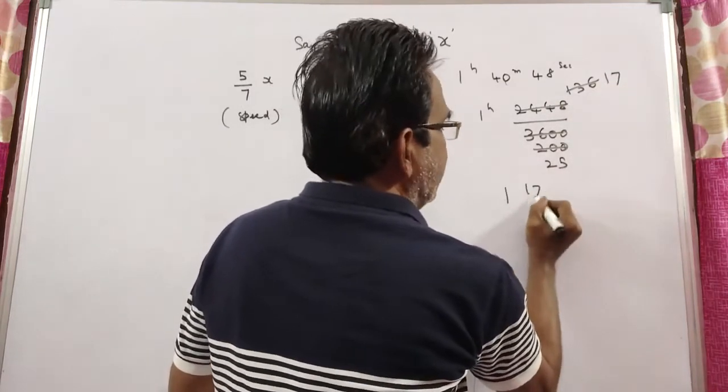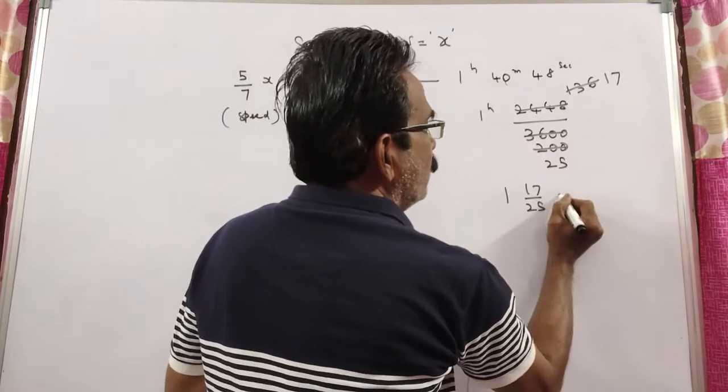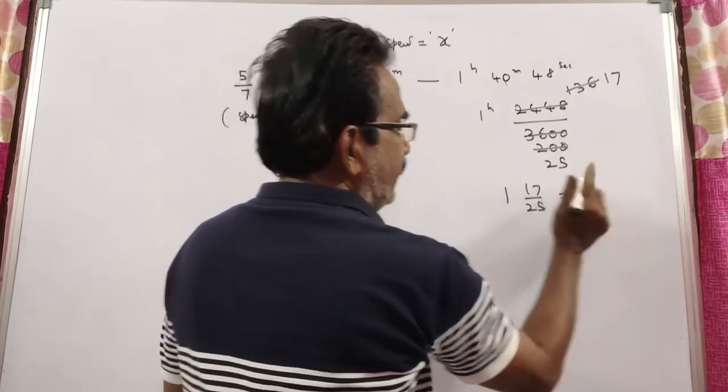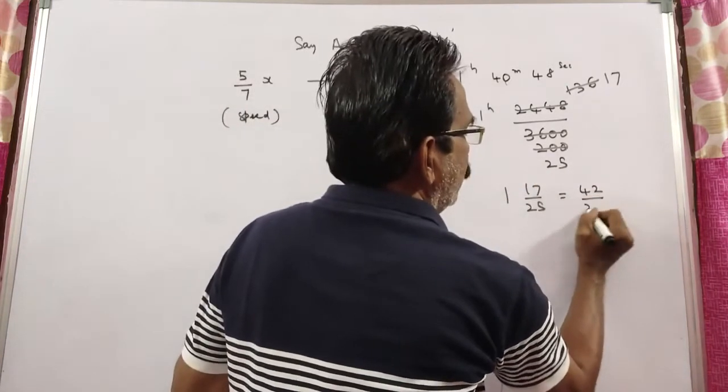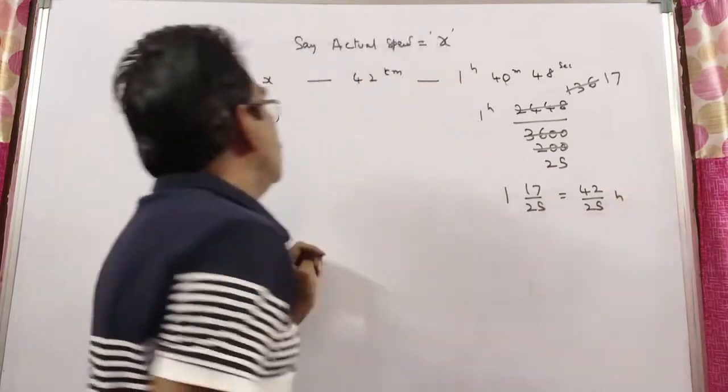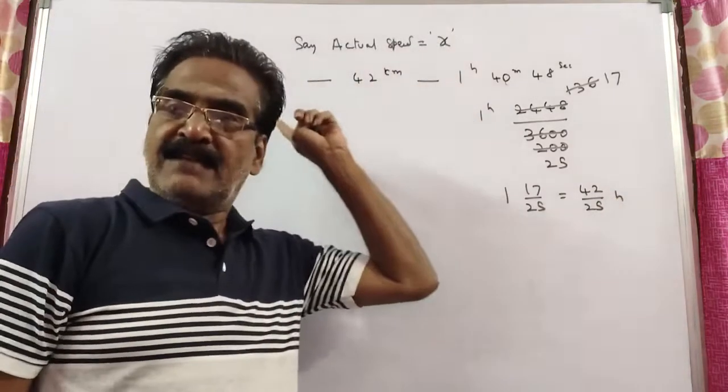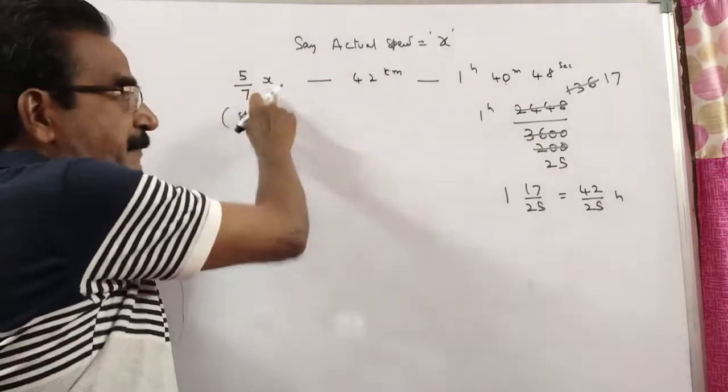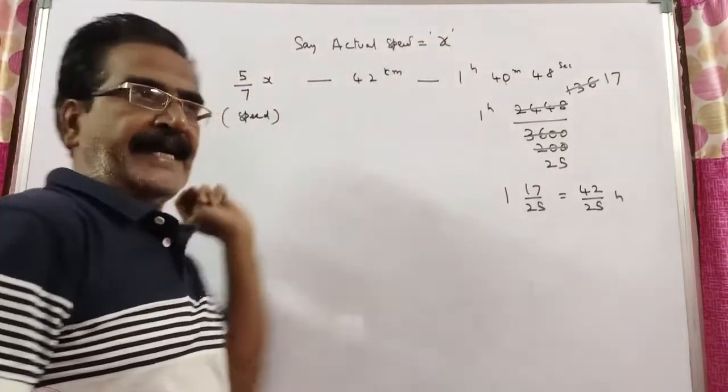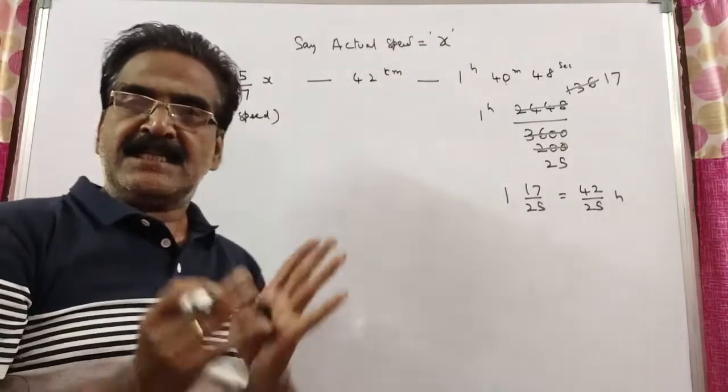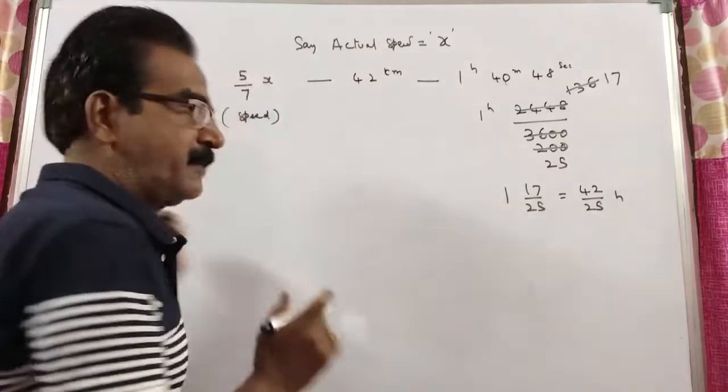So 117 by 825, that equals 1 plus 17/825, which is 42/25 hours. So the car is travelling at 5/7 of its actual speed. Say the actual speed is x. Now the present speed is 5/7 of its actual speed.